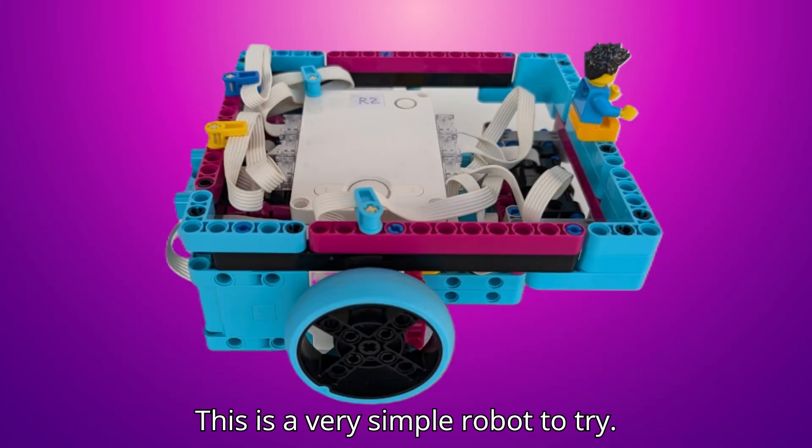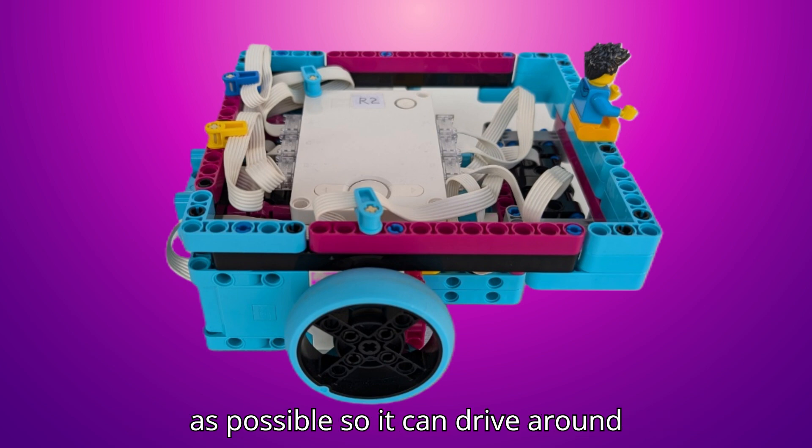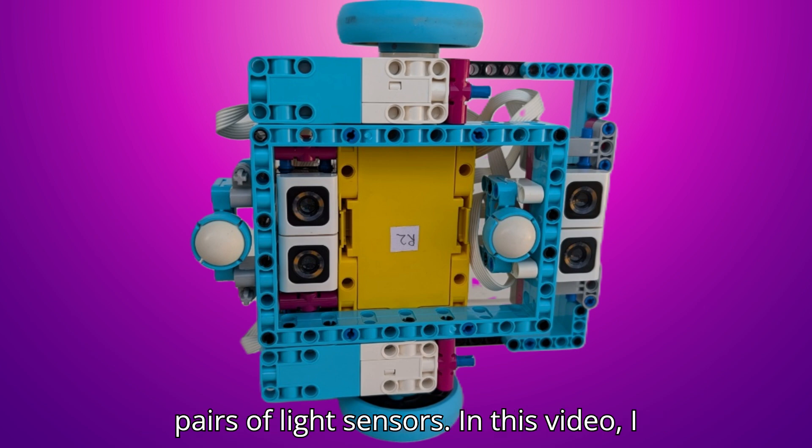This is a very simple robot to try. The heavy components are mounted as low as possible so it can drive around quickly. Looking at the underside we can see two pairs of light sensors. In this video I will only be using one sensor. The other three are there to look into other topics in other videos.